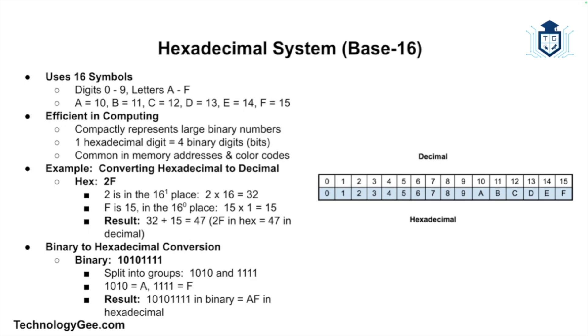Let's break down an example. We have the value 2F in hexadecimal. The 2 is in the 16 to the first place, and that represents 2 times 16, which equals 32. The F represents 15, and it's in the 16 to the zero place. So 15 times 1 equals 15. Add these together: 32 plus 15 equals 47. So 2F in hexadecimal notation is equal to the number 47 in decimal notation.